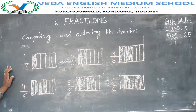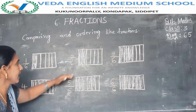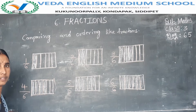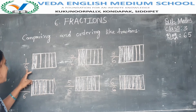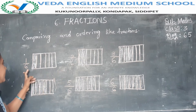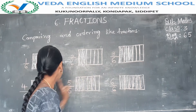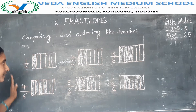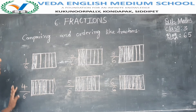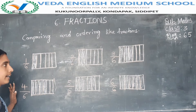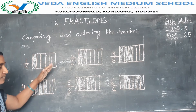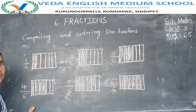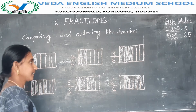In this fraction, these are all fractions: 1 by 6, 2 by 6, 3 by 6, 4 by 6, 5 by 6, 6 by 6. In these fractions, denominators are all the same — 6, 6, 6, 6, 6. So these fractions are called like fractions. I said these fractions are called like fractions.